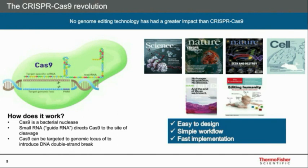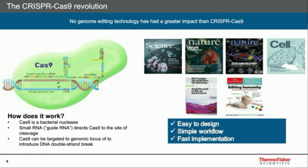A little background on CRISPR-Cas9 if you're not familiar: it's a bacterial endonuclease using a small guide RNA — a chimera of a target-specific CRISPR RNA, which confers specificity using standard Watson-Crick base-pairing rules, and a tracer RNA that associates with the Cas9. Together, we express these in mammalian systems as a chimera we call a guide RNA. These can be targeted to a genomic locus to introduce a DNA double-stranded break virtually anywhere containing a PAM sequence or NGG sequence. CRISPR-Cas9 has been so readily adopted because never before have we had a genome editing tool that's easier to design, has such high efficiency, and is so easy to implement into any workflow.